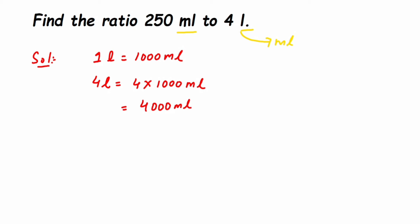Now we're going to find the ratio. So the required ratio is equal to 250 ml to 4 liters, which is 250 upon 4000. Instead of 4 liters, I'm writing 4000 milliliters, but we don't mention the unit when you're writing the ratio.